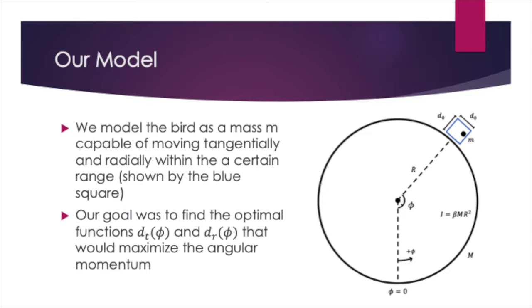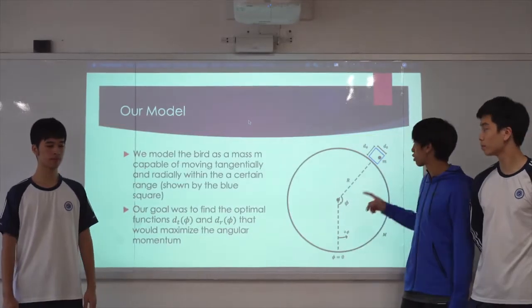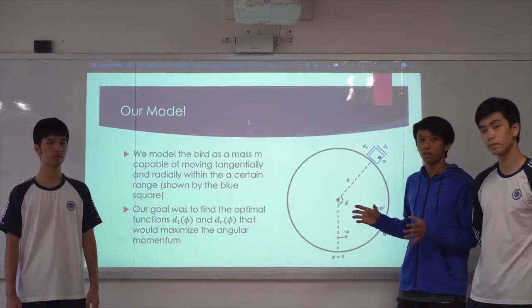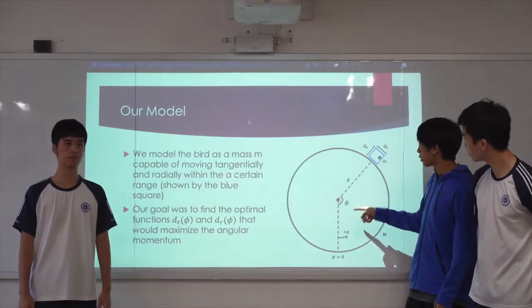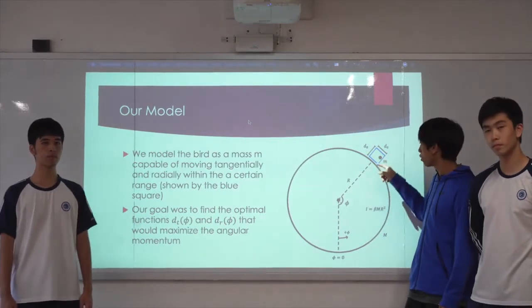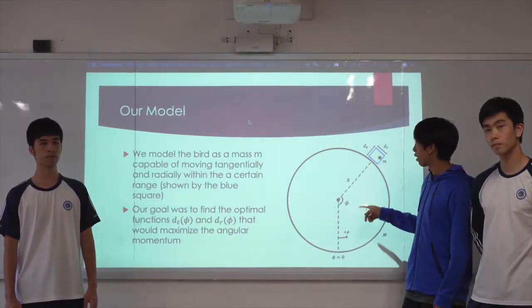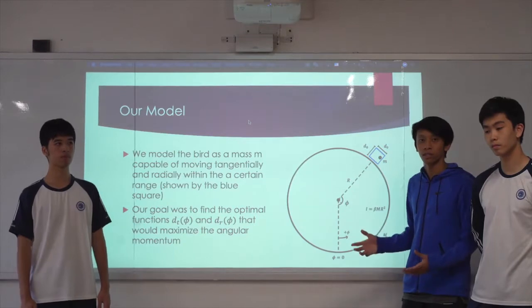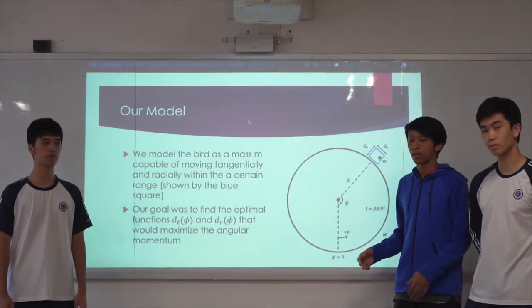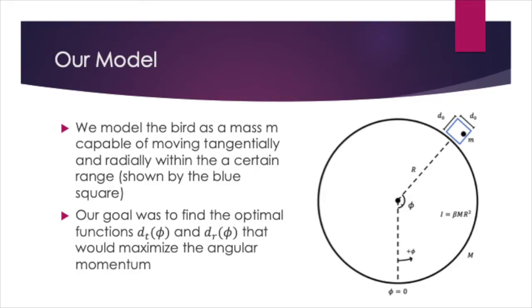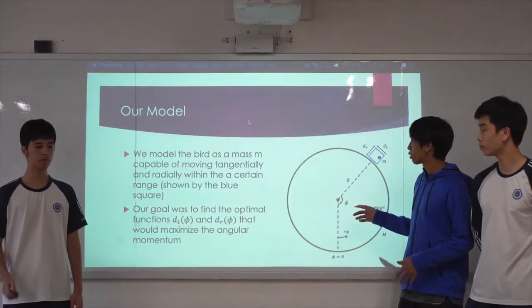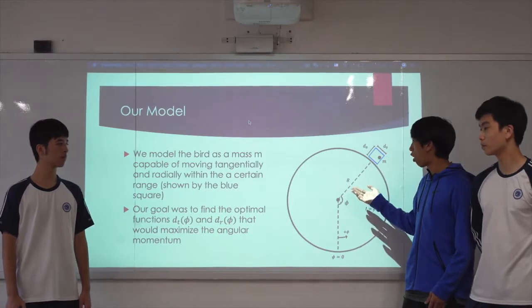Let's look at our model. We modeled the bird as a mass m, capable of moving tangentially and radially within a certain range of d0. We demarcated the position of the wheel as phi, with counterclockwise being positive for phi and phi dot. Our goal was to find the most optimal functions d tangential as a function of phi and d radial as a function of phi that would maximize the angular momentum.